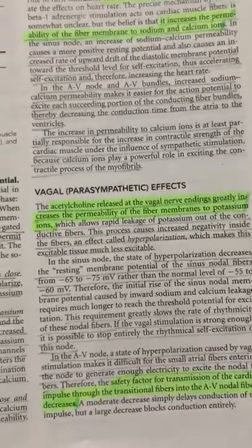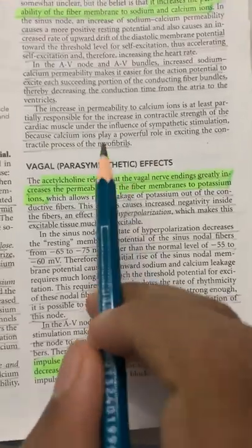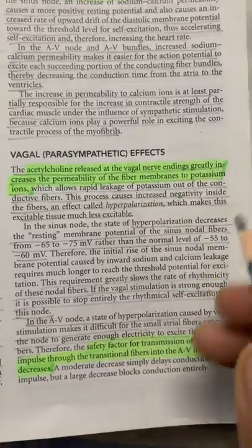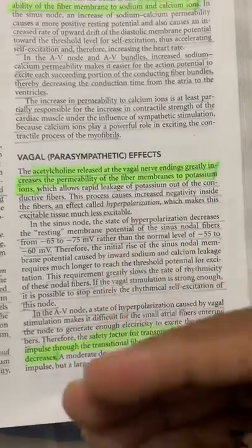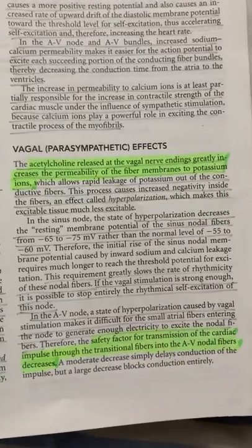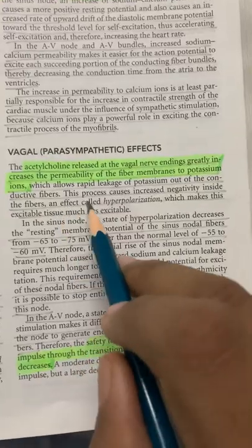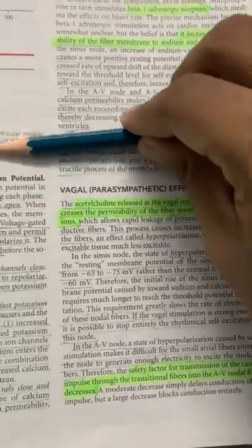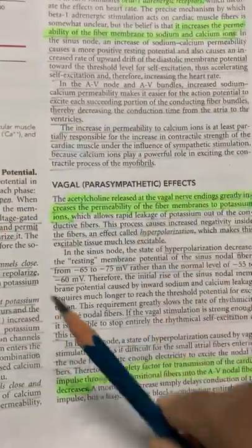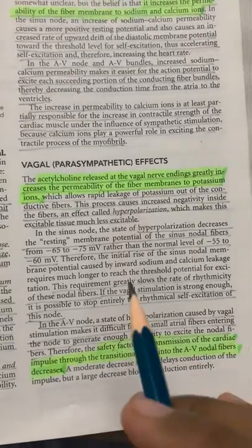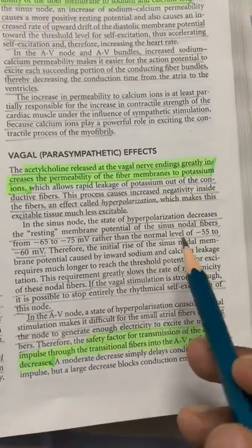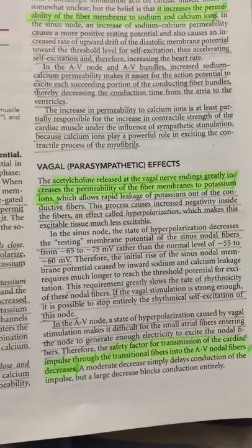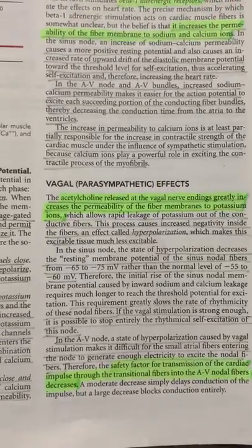Parasympathetic effects: the vagus nerve is mainly a parasympathetic nerve, and acetylcholine is released at vagal nerve endings. This greatly increases the permeability of the fiber to potassium ions, causing greater potassium efflux and rapid leakage of potassium out of the conductive fibers. This increases negativity in the fibers — hyperpolarization — increasing the gap between the RMP and the threshold stimulus, making it difficult to excite the tissue. If vagal stimulation is strong enough, it is possible to stop entirely the rhythmical self-excitation of the SA node.